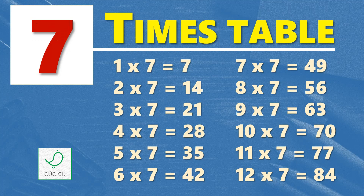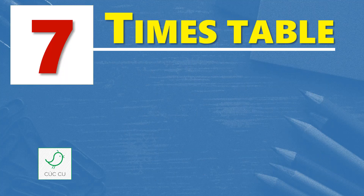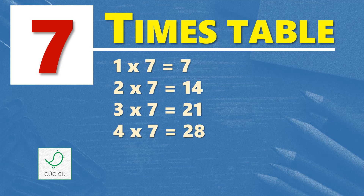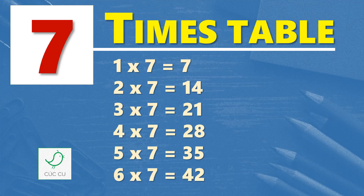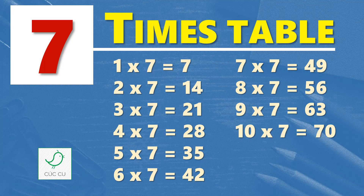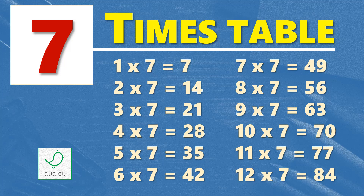Multiplication table of seven. Seven times table. One times seven is seven, two times seven is fourteen, three times seven is twenty-one, four times seven is twenty-eight, five times seven is thirty-five, six times seven is forty-two, seven times seven is forty-nine, eight times seven is fifty-six, nine times seven is sixty-three, ten times seven is seventy, eleven times seven is seventy-seven, twelve times seven is eighty-four.